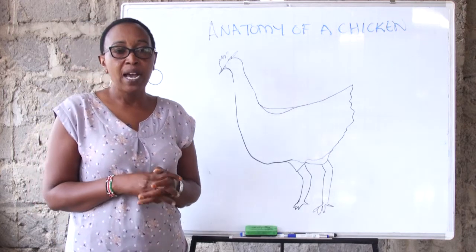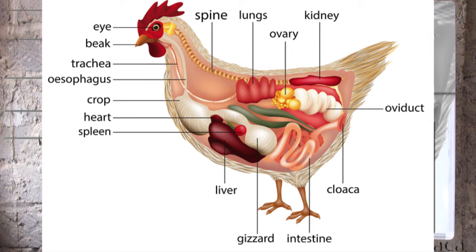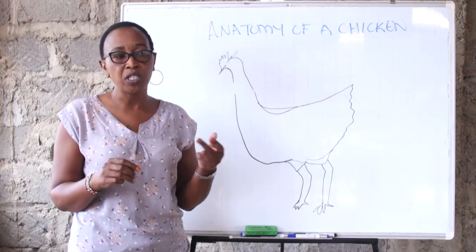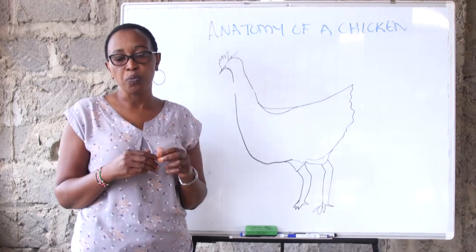The bird has lungs. It has a crop, and it has another organ that we call the proventriculus. These two organs — the crop and the proventriculus — are only found in birds. When I talk about the digestion system of the bird, I will tell you what function these two play.